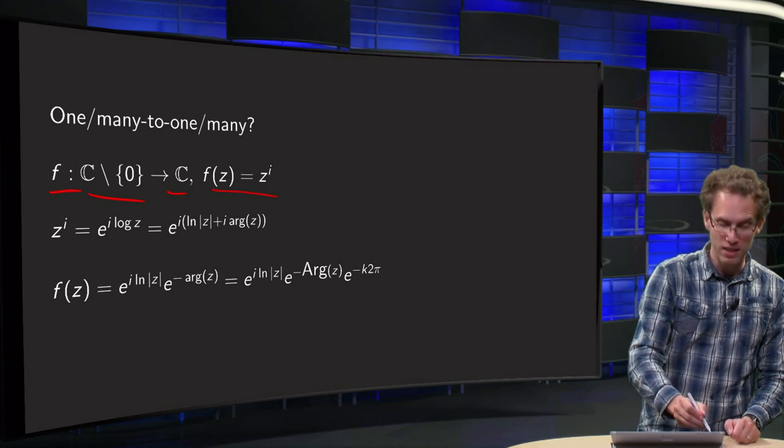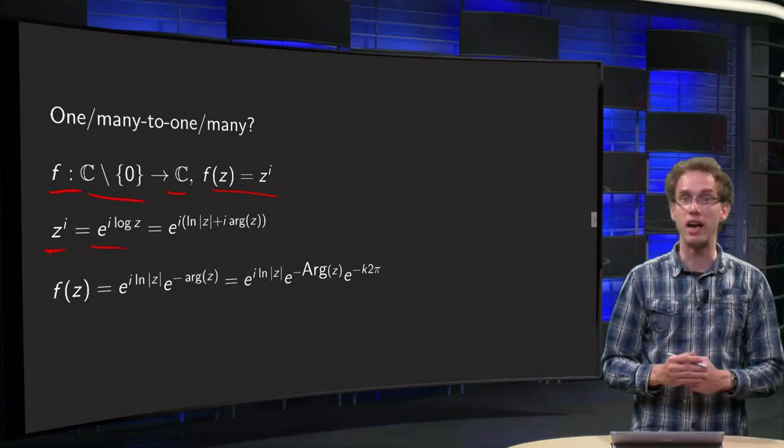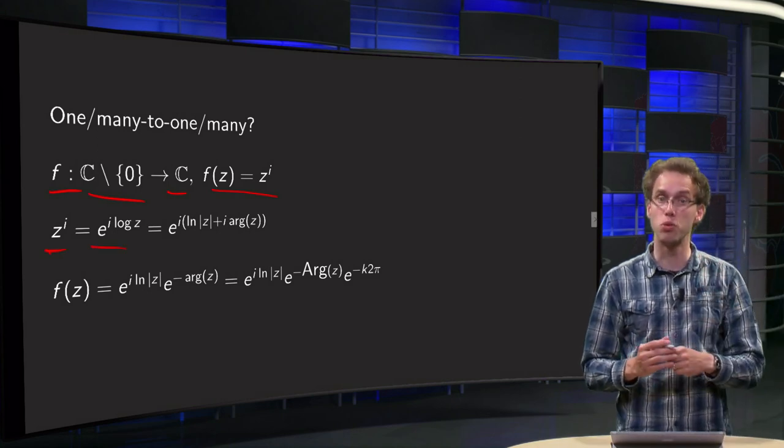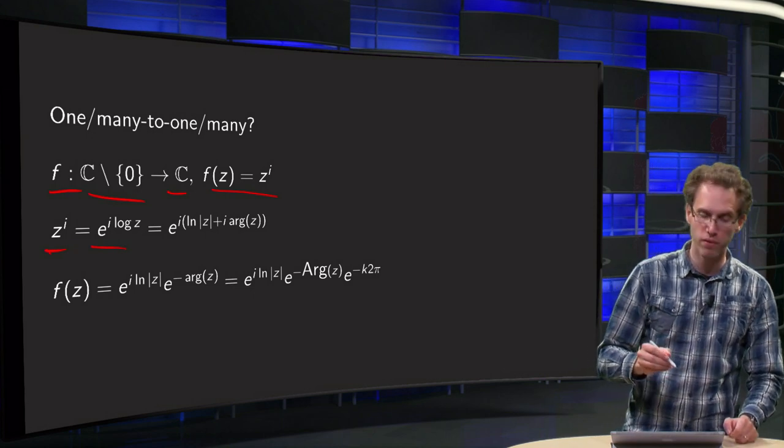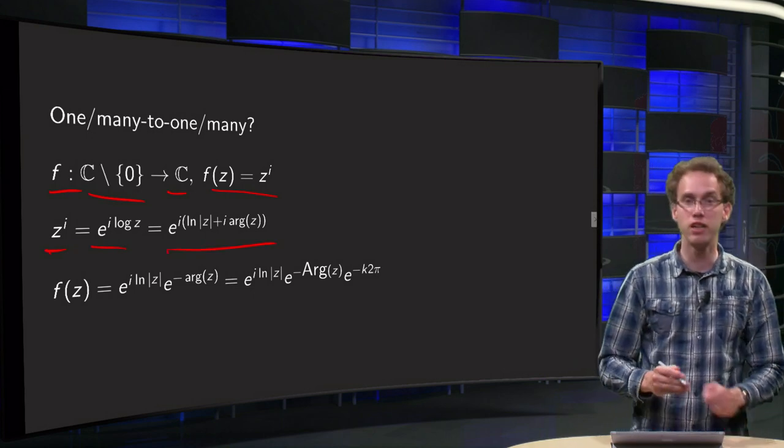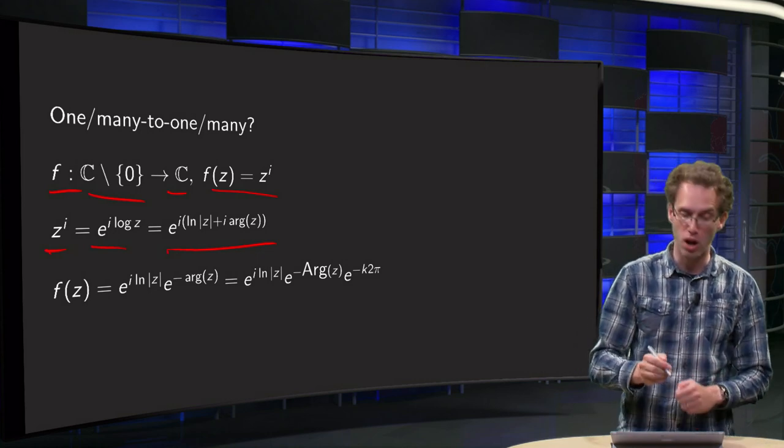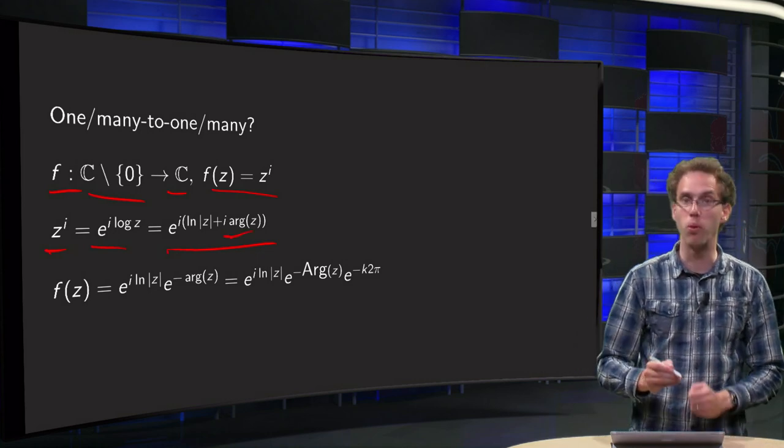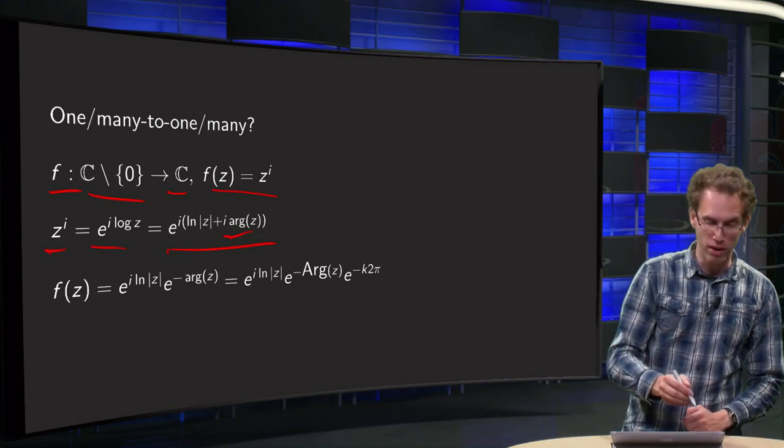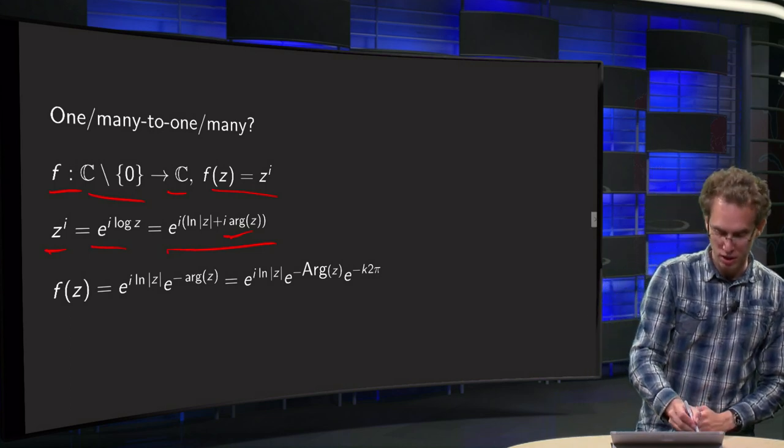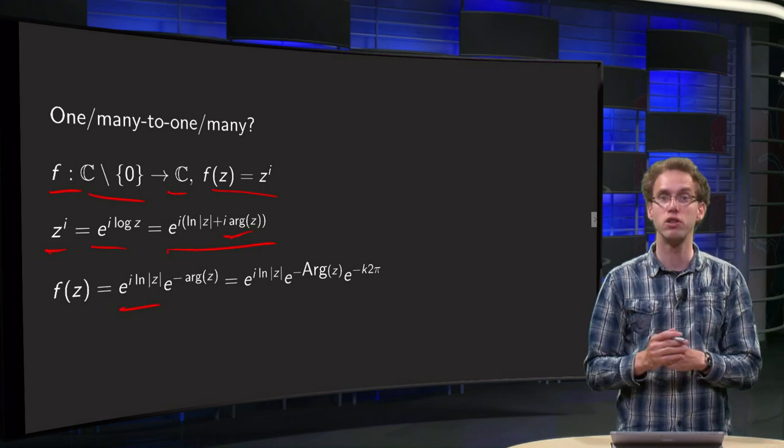How is z to the power i defined? z^i equals e^(i log z). This is small l which can be written down as e^(i ln|z| + i·arg(z)) where we have the small a. And then we have our f(z) as e^(i ln|z|).